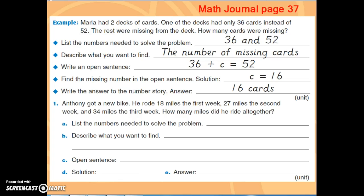If we take a look at Math Journal page 37, they give you a nice example here of what your work should look like. The example has Maria. Maria has two decks of cards. One of the decks had only 36 cards instead of 52. The rest were missing from the deck. How many cards were missing?